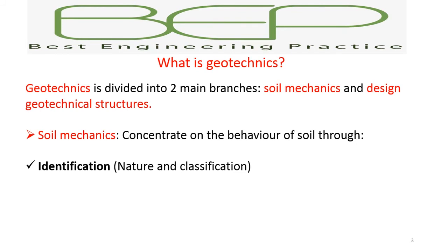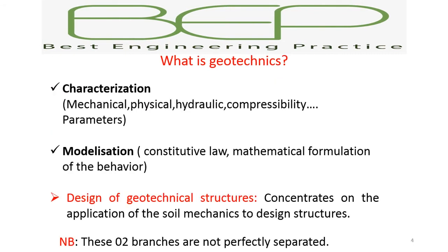Geotechnics is divided into two main branches: soil mechanics and the design of geotechnical structures. The first branch, soil mechanics, concentrates on the behavior of soil through soil identification — determining the nature and classification of soil — and characterization, meaning determining the mechanical, physical, hydraulic, and compressibility parameters. We also have modelization, done through constitutive laws and mathematical formulation of the behavior of soil.